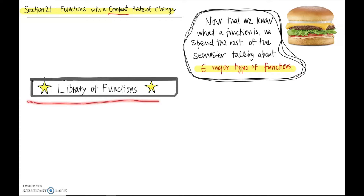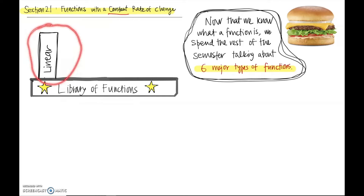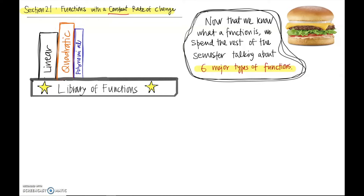Imagine for a minute that we have a shelf, and on this shelf, we're going to put different functions that we're going to learn throughout this semester. This will be our library of functions. The first to go on our shelf is a group of functions called linear functions. After linear functions, we're going to see quadratic functions, and then we extend that idea to a set called polynomial functions. So already we will have three major types of functions.